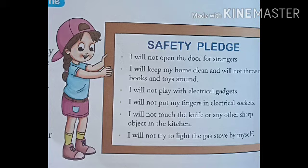Safety pledge — a promise: I will not open the door for strangers. I will keep my home clean and will not throw my books and toys around. I will not play with electrical gadgets — gadget means an electrical machine which you use for a particular purpose. I will not put my fingers in sockets. I will not touch the knife or any other sharp object in the kitchen. I will not try to light the gas stove by myself. These are the safety rules — the safety pledge — which we follow at home.